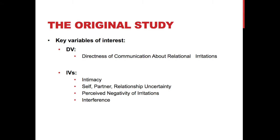The original study had a number of key variables of interest. Their dependent variable was the directness of communication about relational irritations — that is, the communication we're having about irritations regarding our relationship, to see whether people communicated directly or indirectly. Their primary independent variables were first intimacy, which deals with things like relational closeness, loving, caring, and nurturing.